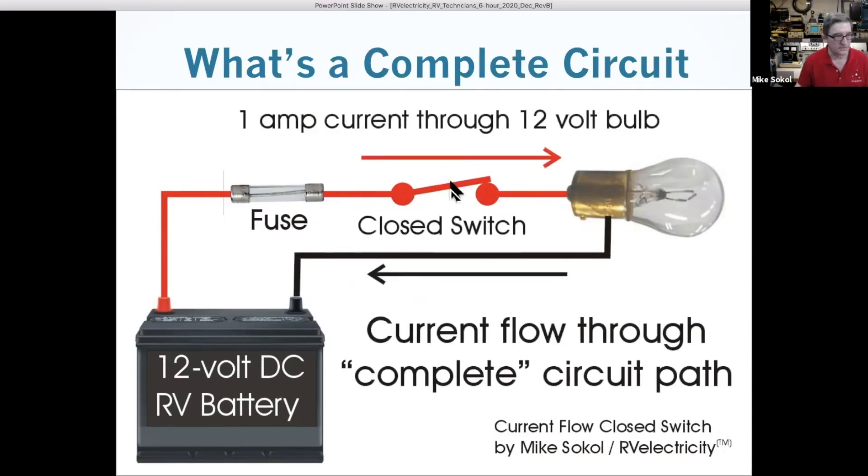If we close the switch, we end up with a few amperes of current flowing through the bulb. It's flowing from here through the fuse, through the switch, through the bulb, through the filament, and then back in this little endless loop. That's what we call a complete circuit.